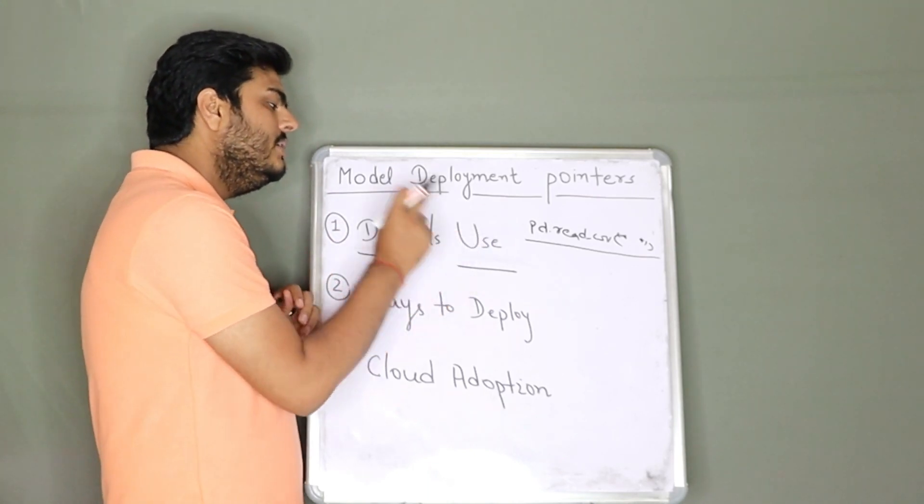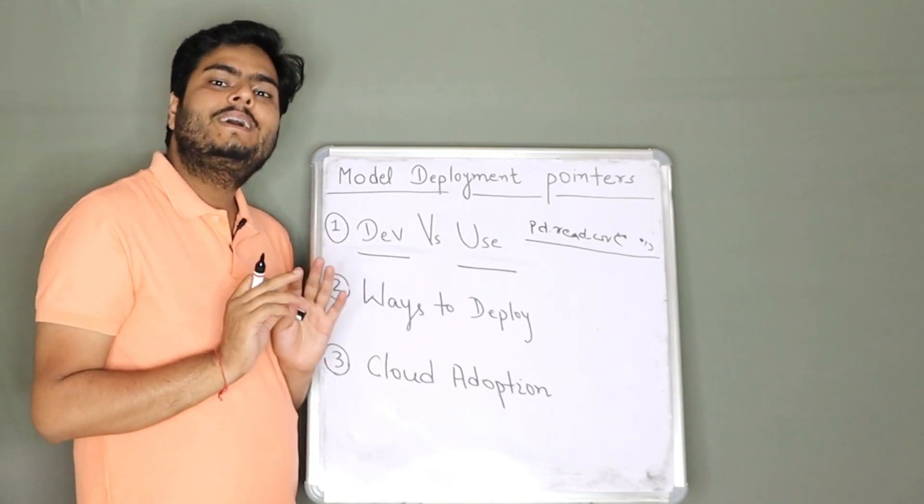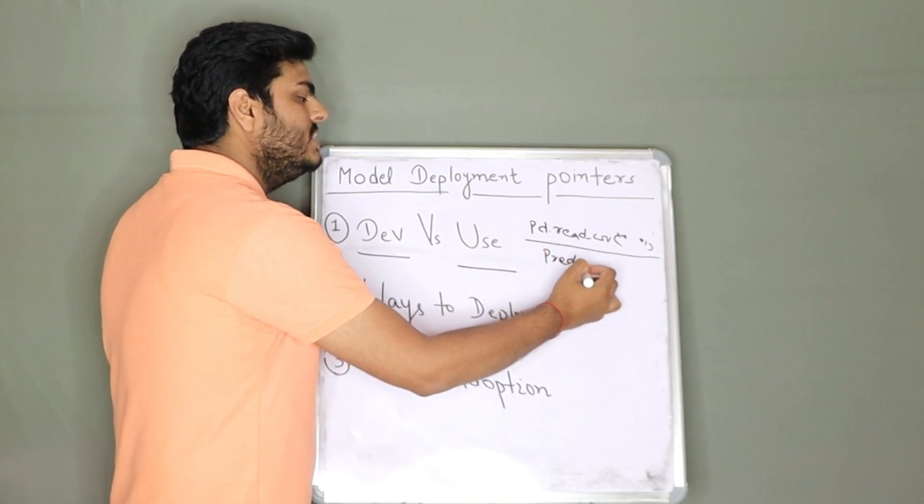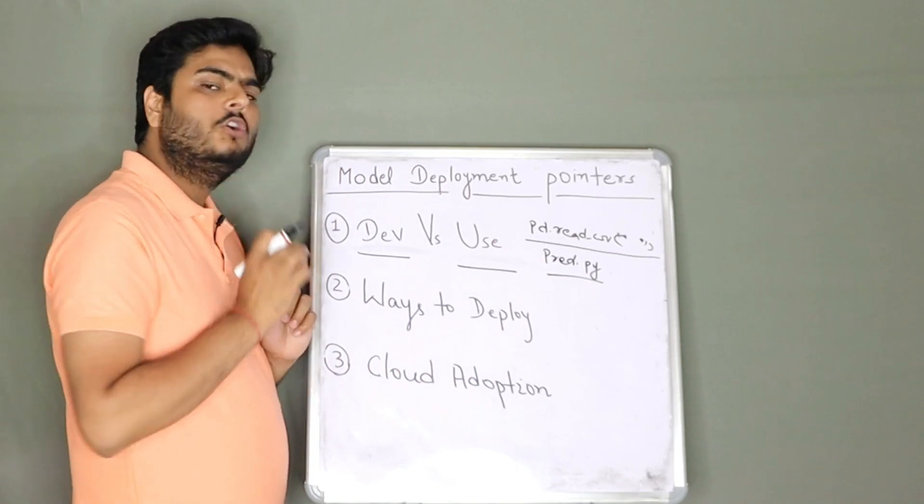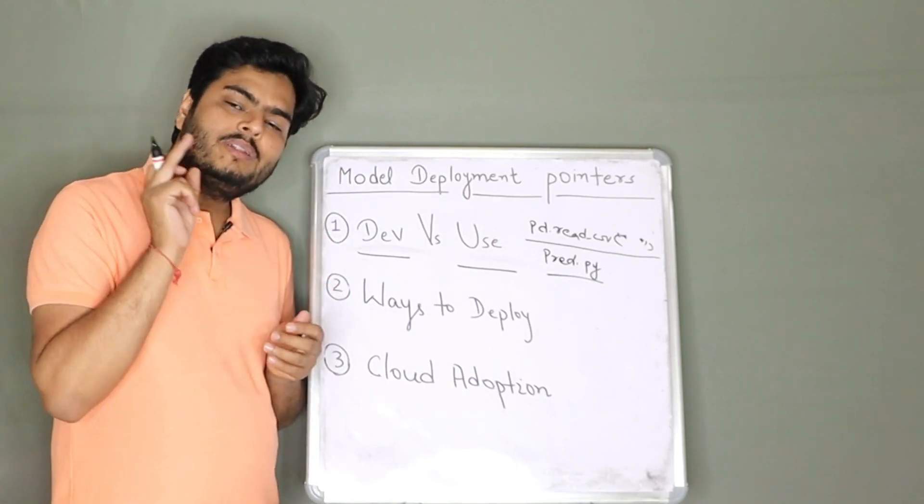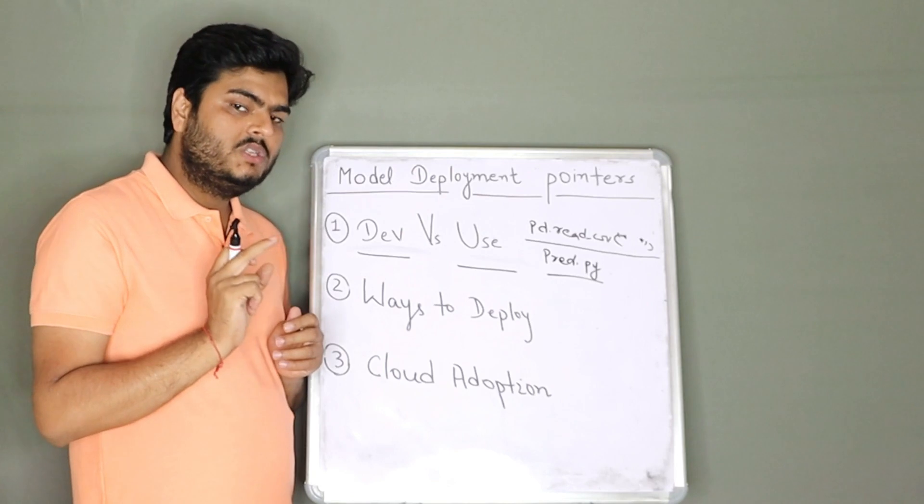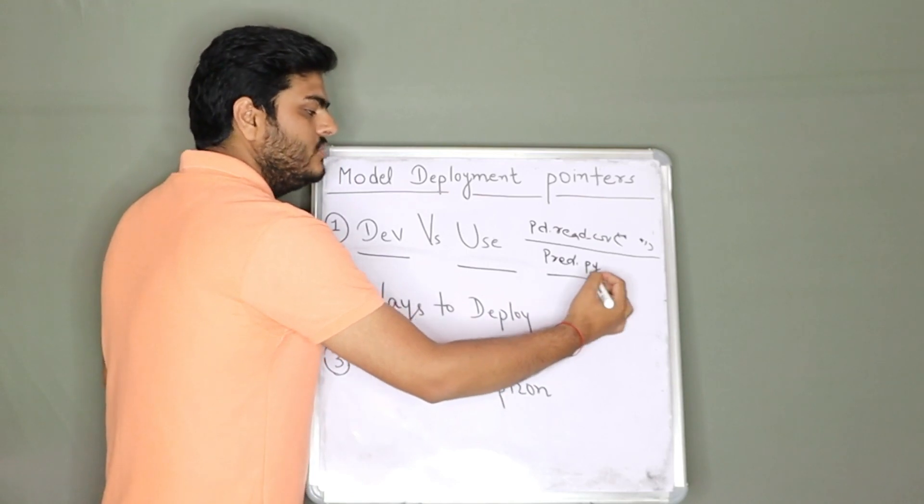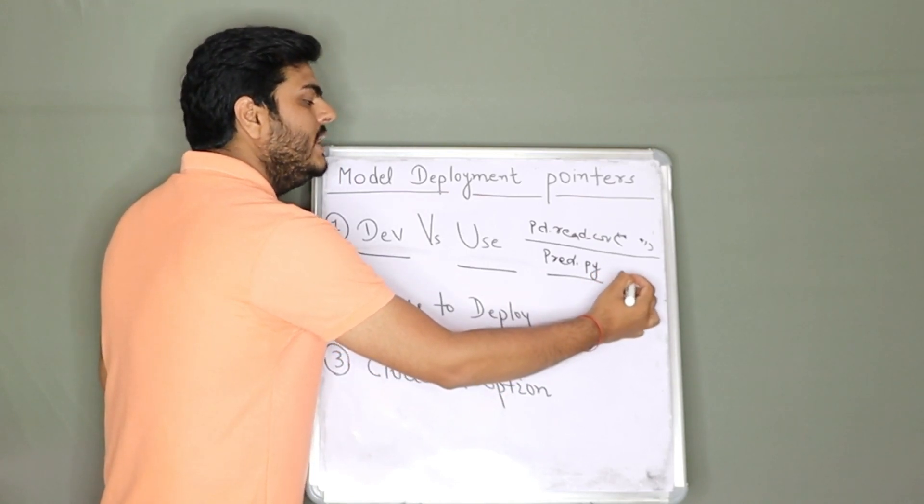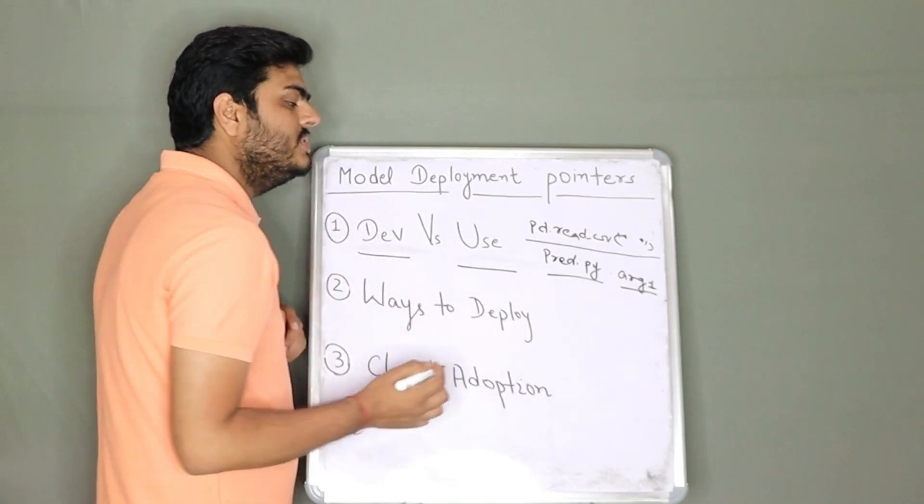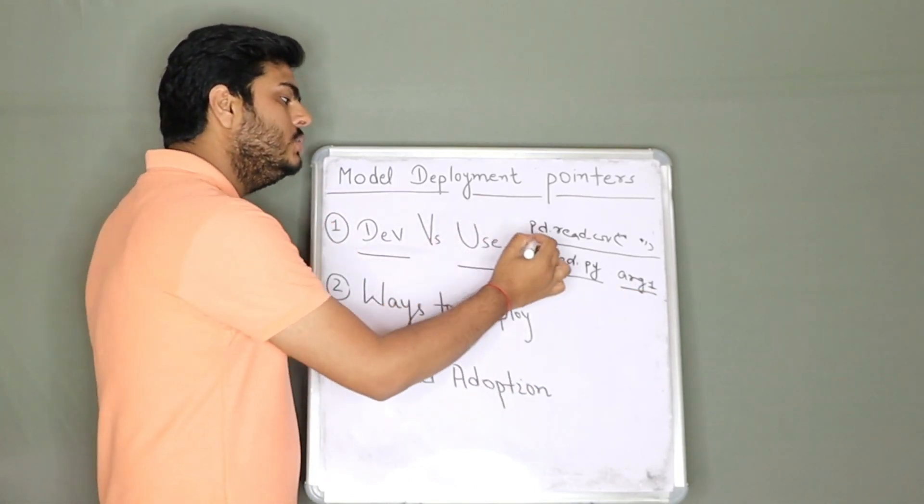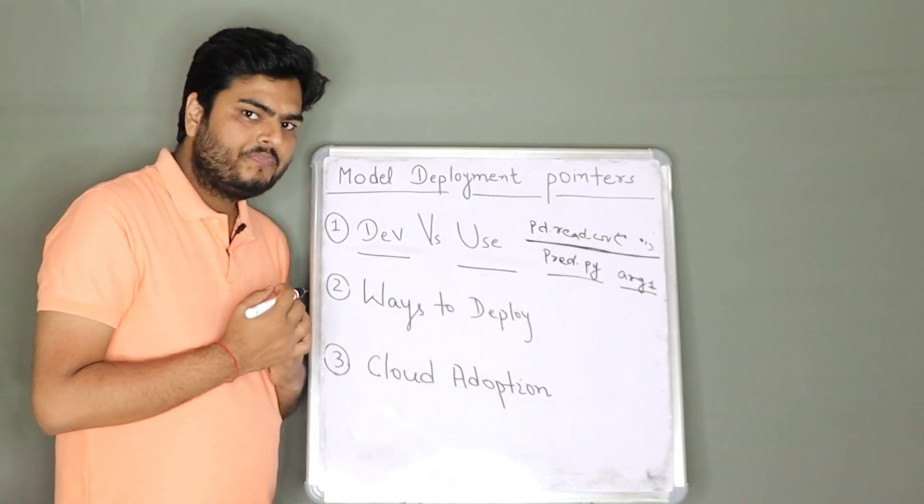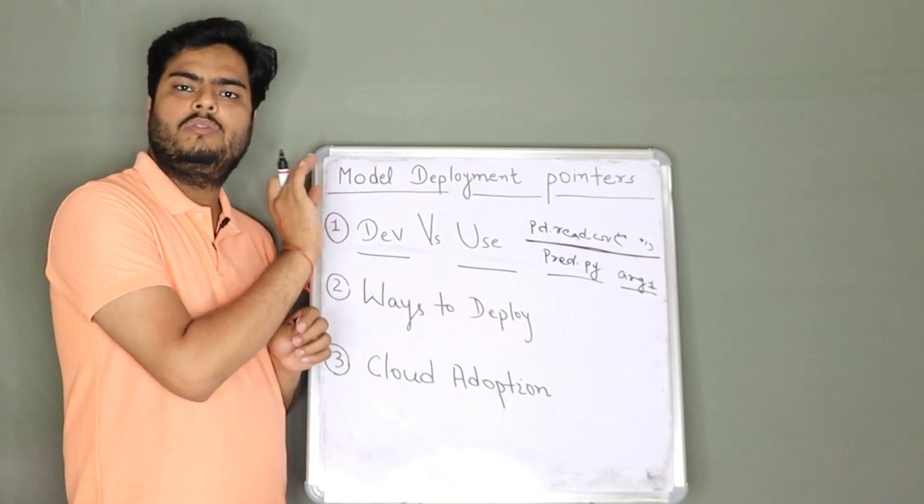For example, here, if I am deploying a model in Unix platform, and then my prediction script is called pred.py, this pred.py will take as input the new data on which my model is going to be used. So the new data will be here, one argument. So pred.py, my first argument, this first argument goes as the input to pd.read_csv while reading the data. That is one difference or one high level thing. I'm just giving you an example.